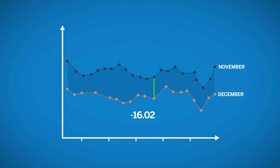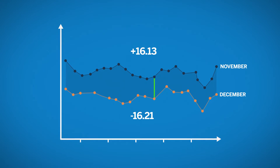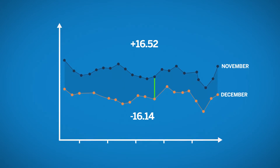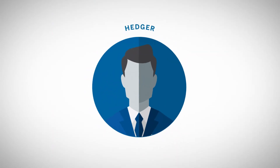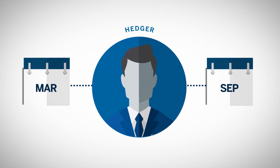In most cases, there will be a loss in one leg of the spread, but a profit in the other leg. If the spread is successful, the gain in the profitable leg will outweigh the loss in the losing leg. Calendar spreads are also used by hedgers to roll a dairy futures position from one delivery month to the next.